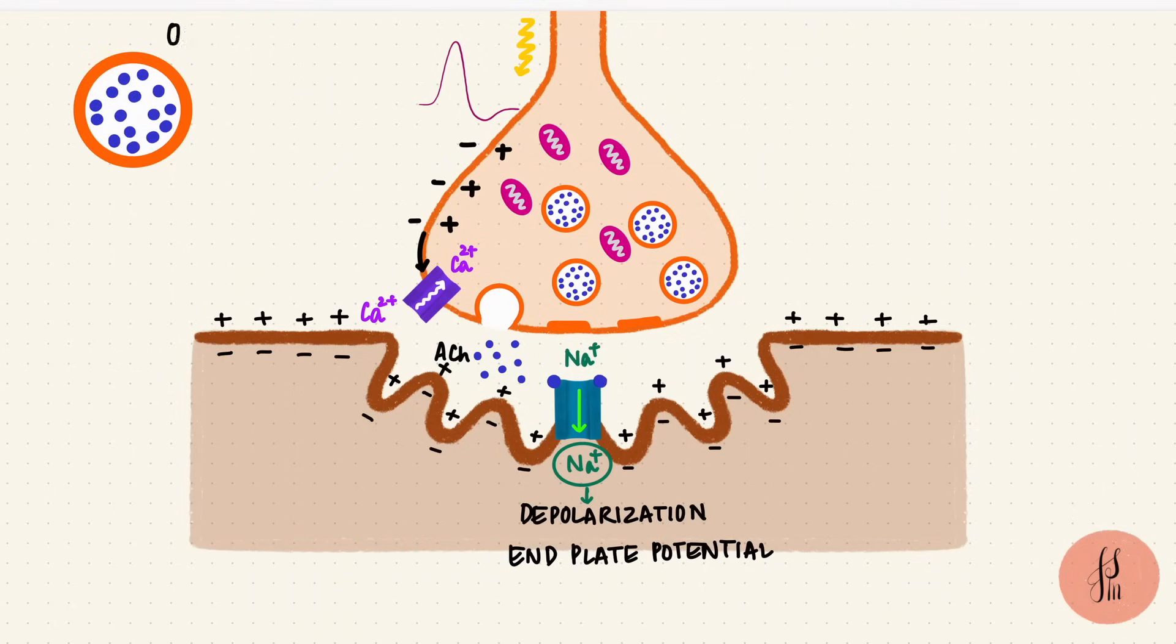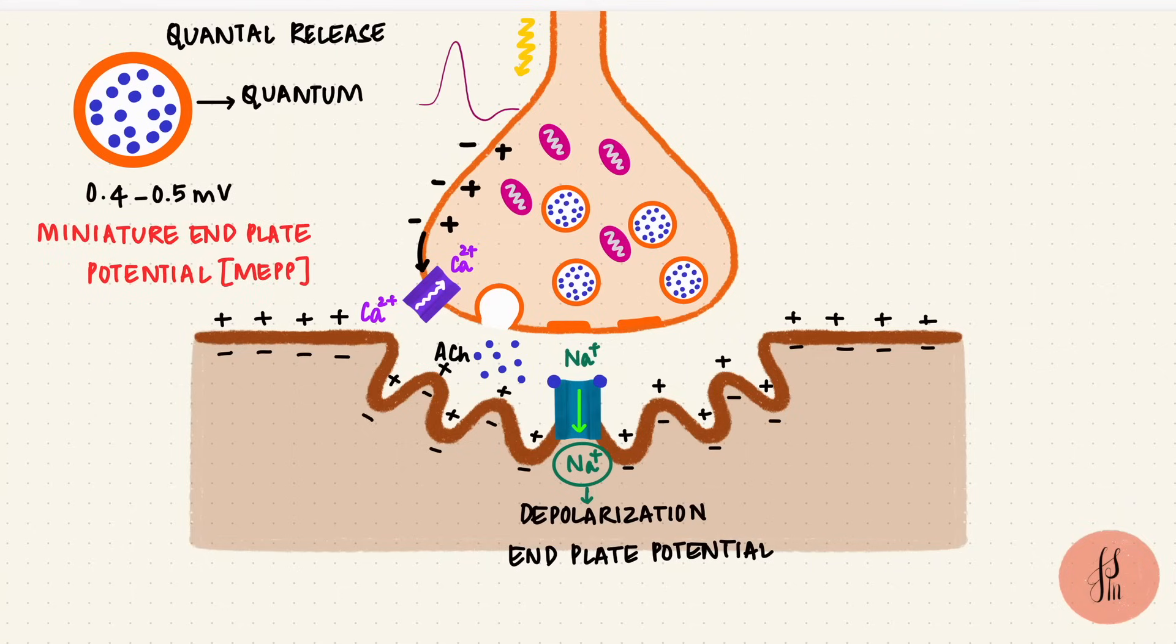The release of acetylcholine is quantal. Each vesicle is a quantum, and it creates a potential change of around 0.4 to 0.5 millivolts. This is called a miniature end plate potential, and it happens randomly at rest.